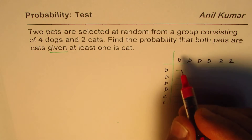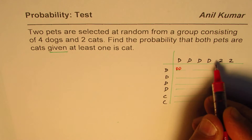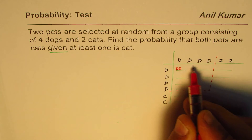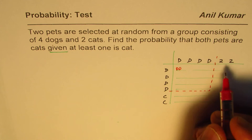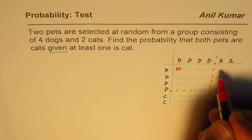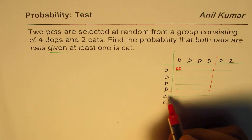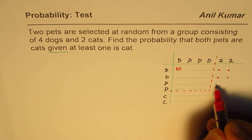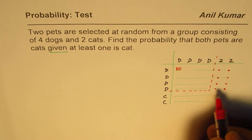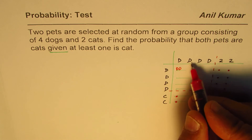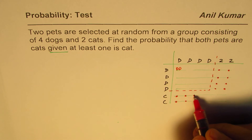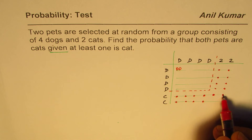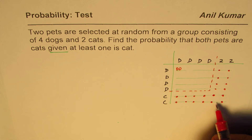What we are also given is that at least one is a cat. So these combinations here will be two dogs — no cat. Since we are given at least one cat, I'll count these combinations which give cat and dog: cat-dog, cat-dog, cat-dog, cat-dog. These combinations give you dog and cat on the other side as well. And at this position you have cat and cat — two cats.